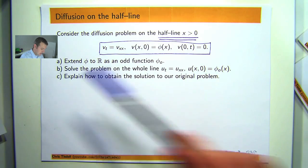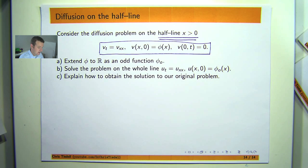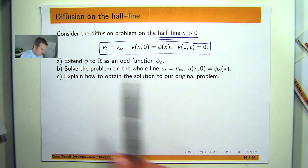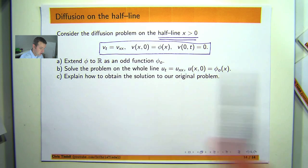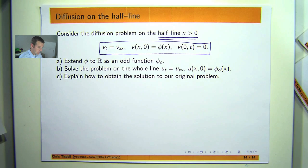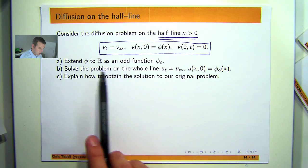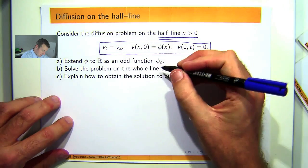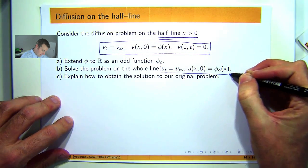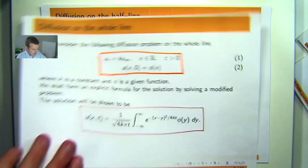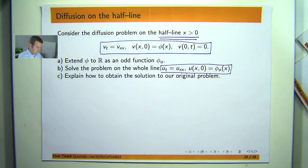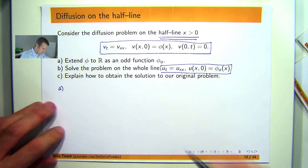We have a couple of steps to work through to build the solution. First, we extend the initial temperature function to the whole real line as an odd function, phi sub O. Then we solve the new extended problem using the formula we already know from previous videos. Lastly, we explain how to obtain the solution to the original problem. We'll work through it step by step.